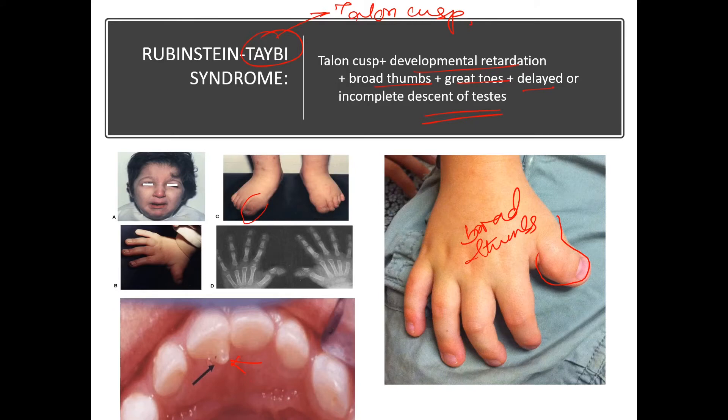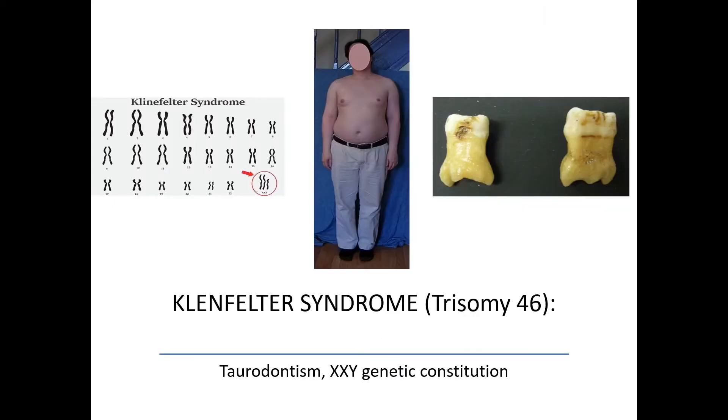The most important feature of Rubenstein-Taybi is talon cusp — you have to remember that. Broad thumbs — I have shown you how broad the thumbs are — and great toes are also large. Then delayed or incomplete descent of testis.